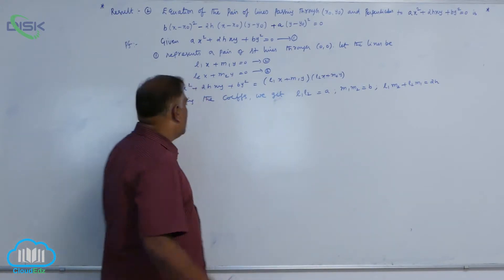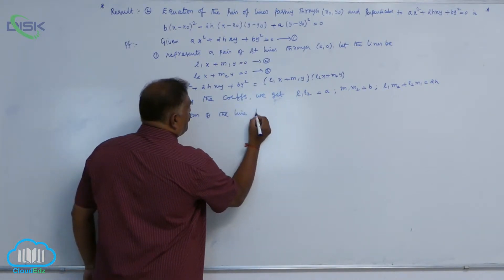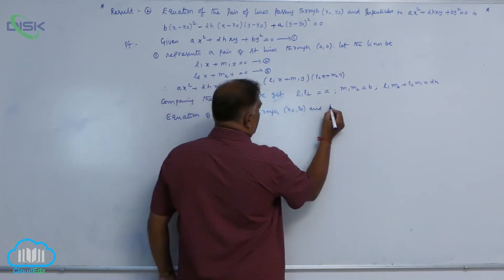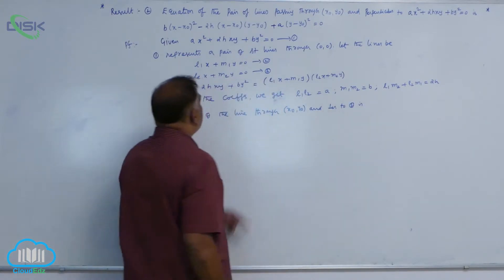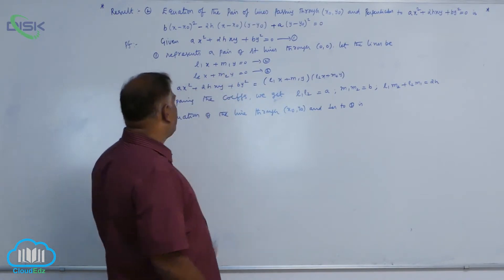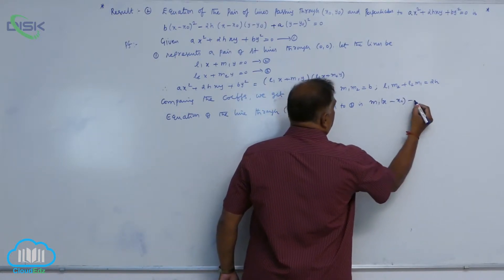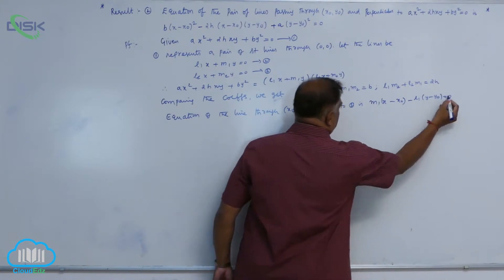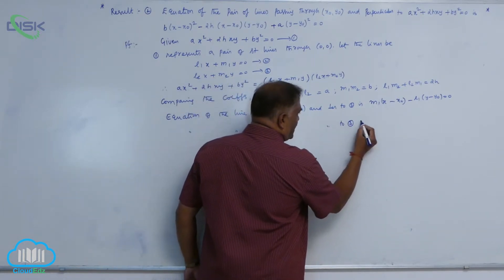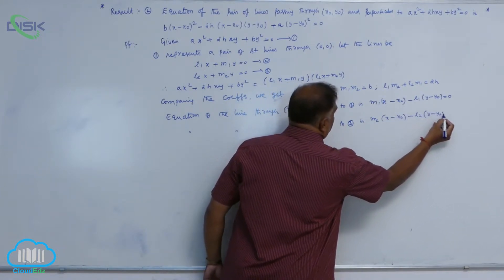The requirement is the equation of the line through (x₀, y₀) and perpendicular to each line. For a perpendicular line, we interchange the x and y coefficients and change the sign. So the perpendicular to l₁x + m₁y = 0 through (x₀, y₀) is m₁(x - x₀) - l₁(y - y₀) = 0, and perpendicular to l₂x + m₂y = 0 is m₂(x - x₀) - l₂(y - y₀) = 0.